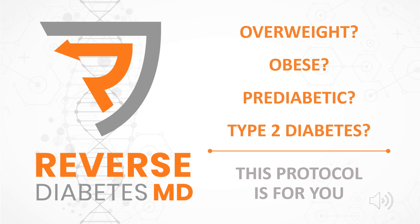If you are overweight, obese, pre-diabetic, or have type 2 diabetes, this protocol is for you. Only 12.2% of American adults are now metabolically healthy. 86 million adults in the U.S. have pre-diabetes, and 70% of these individuals will eventually develop diabetes. Being overweight or obese is the main factor for progression to diabetes. The best way to reverse diabetes is to not get diabetes in the first place, because your chances of heart disease, cancer, and death are increased even as a pre-diabetic. Our protocol offers real hope and transformational change to patients who would otherwise be consigned to a lifetime of medications, doctor's visits, and suffering. Welcome to ReverseDiabetes.md.